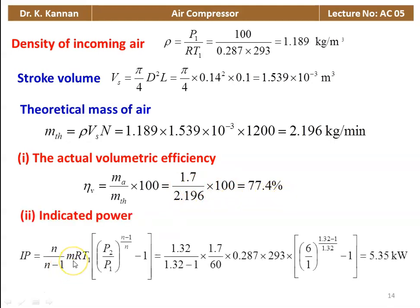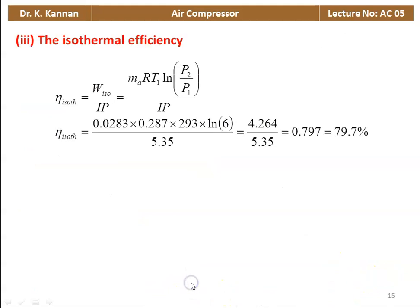Indicated power for polytropic compression: IP = (n/(n-1)) × ṁRT1 × [(P2/P1)^((n-1)/n) - 1] = (1.32/0.32) × (1.7/60) × 0.287 × 293 × [(6/1)^(0.32/1.32) - 1] = 5.35 kW. Isothermal efficiency = isothermal power / indicated power = (ṁRT1 × ln(P2/P1)) / IP = (0.0283 × 0.287 × 293 × ln6) / 5.35 = 4.264 / 5.35 = 79.7%.